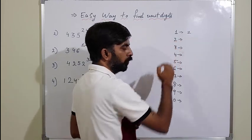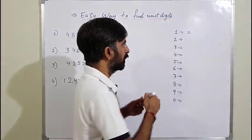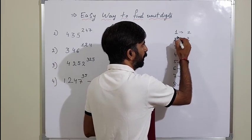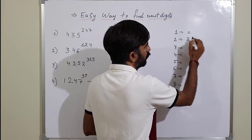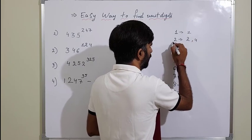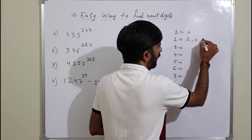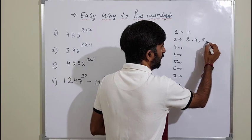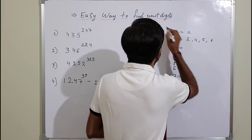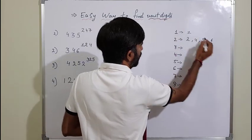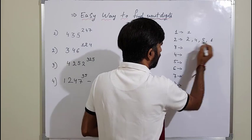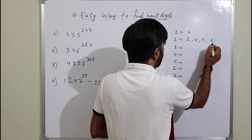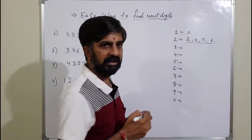For 2: 2 raised to 1 gives 2, 2 raised to 2 gives 4, 2 raised to 3 gives 8, and 2 raised to 4 gives 16 — so the unit digit is 6. Now 2 raised to 5 gives 32, so unit digit 2 comes again. This means the unit digits repeat in a cycle after every 4 powers.